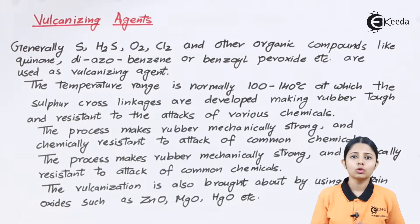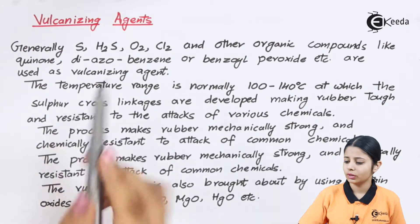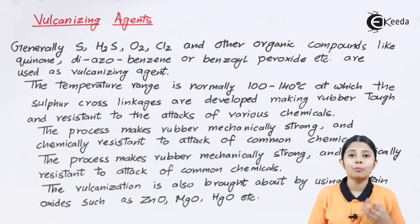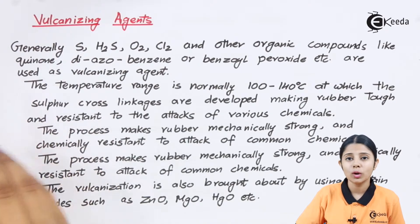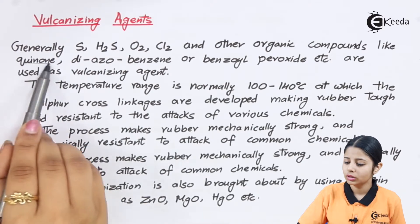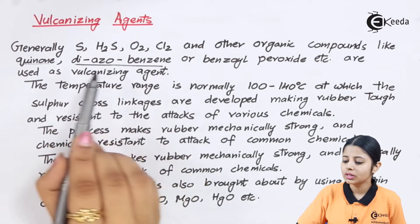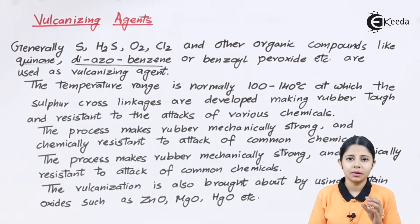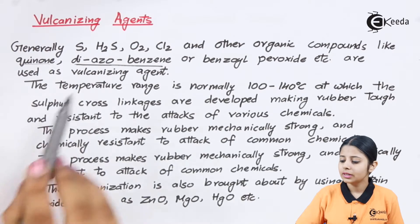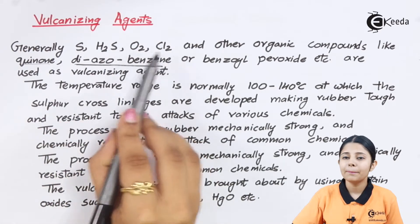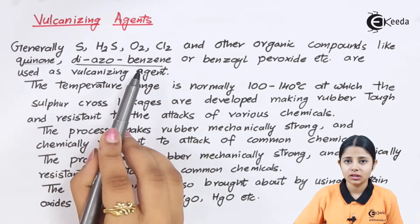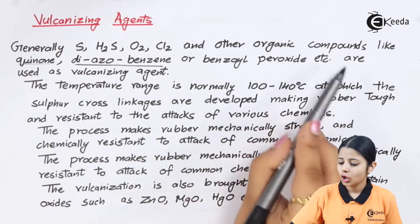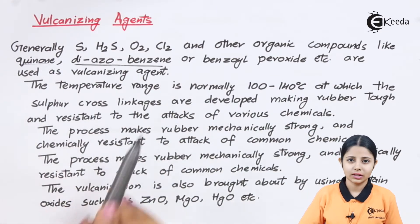Nowadays we not only use sulfur but many other elements such as H2S, oxygen, and chlorine. We also have some complex organic compounds like quinone and diazobenzene. The azo group is N double bond N — nitrogen with a double bond. Diazobenzene has this azo group with a benzene, making it an organic vulcanizing agent. Benzoyl peroxide is also used. All of these are now used as vulcanizing agents.